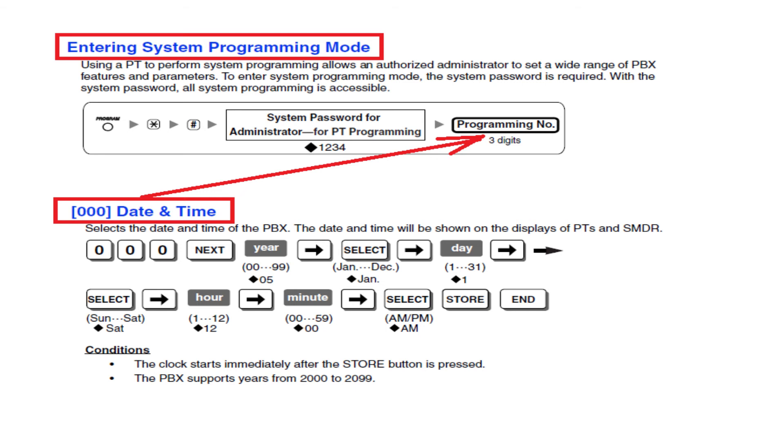Then forward DND button and select AM or PM by using auto answer key. After that you have to save the program by using auto dial key. Then you can press hold button and this is the end of your first program to set up date and time. I hope you learned how to set up date and time.